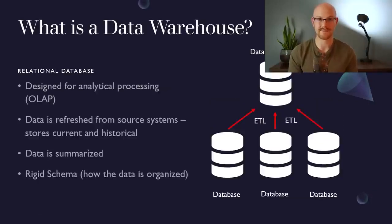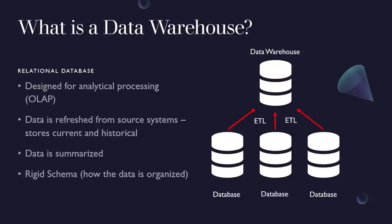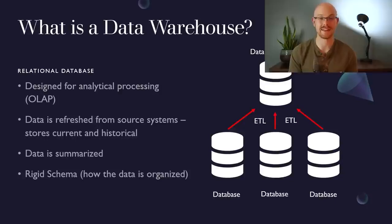A data warehouse is also a database, but it's going to be used for analytical processing, or OLAP, which stands for online analytical processing, and it's created to basically analyze huge amounts of data. In this visualization, these three databases on the bottom are all aggregating and sending their data to the data warehouse via an ETL process, which is where it extracts the data, transforms it, and loads it exactly how they need it in the data warehouse. That's how data is put into the data warehouse — it isn't getting it directly from the source.